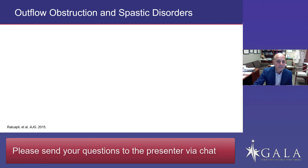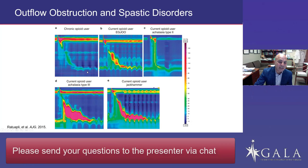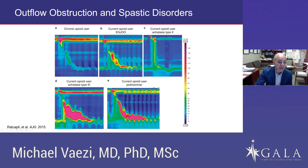From that study, looking at it pictorially, in someone on chronic opioid use we see EGJ outflow obstruction pattern and hypercontractile state. Someone could have typical type 2 achalasia with lack of relaxation of the EGJ, as well as simultaneous contraction. You may have type 3 where the LES is not relaxing and you have very high amplitude contractions, or jackhammer esophagus. These are patterns published in the literature on patients on chronic opioid use.